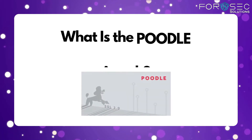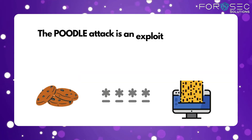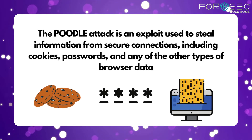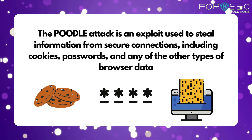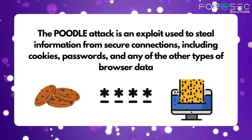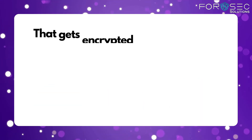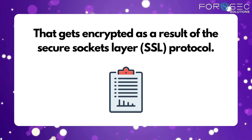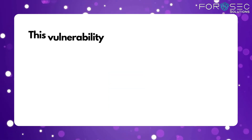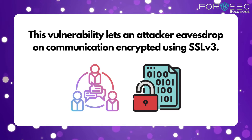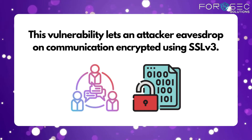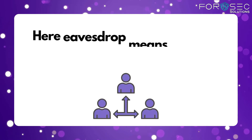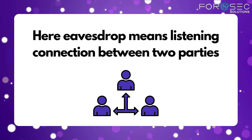The Poodle Attack is an exploit used to steal information from secure connections, including cookies, passwords, and any other type of browser data that gets encrypted as a result of the Secure Socket Layer, that is SSL protocol. This vulnerability lets an attacker eavesdrop on communication encrypted using SSL version 3. Here, eavesdrop means listening to the connection between two parties.